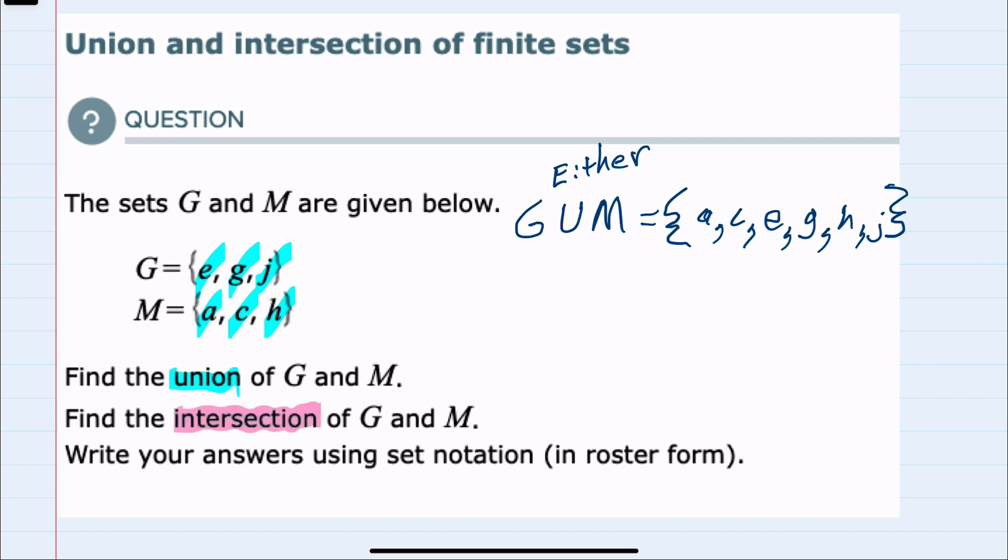For the second part we're asked to find the intersection of G and M. Here we would need elements to be in both. So this would be the overlap between G and M.